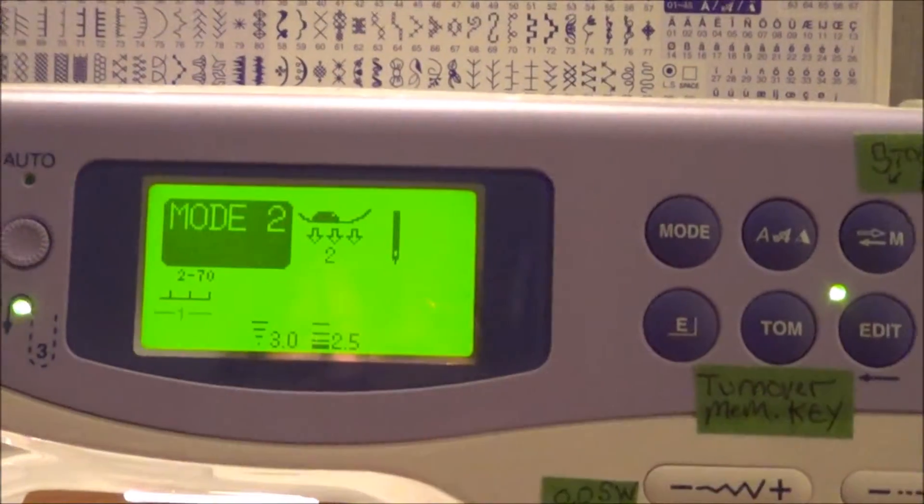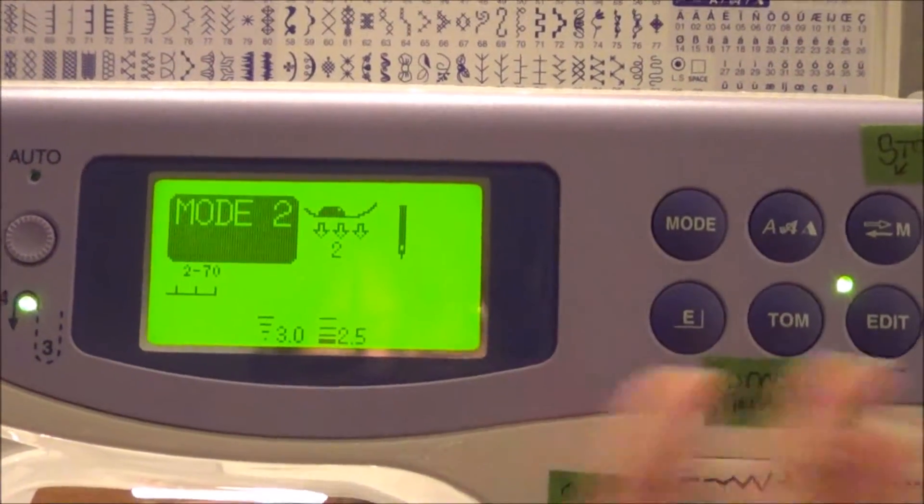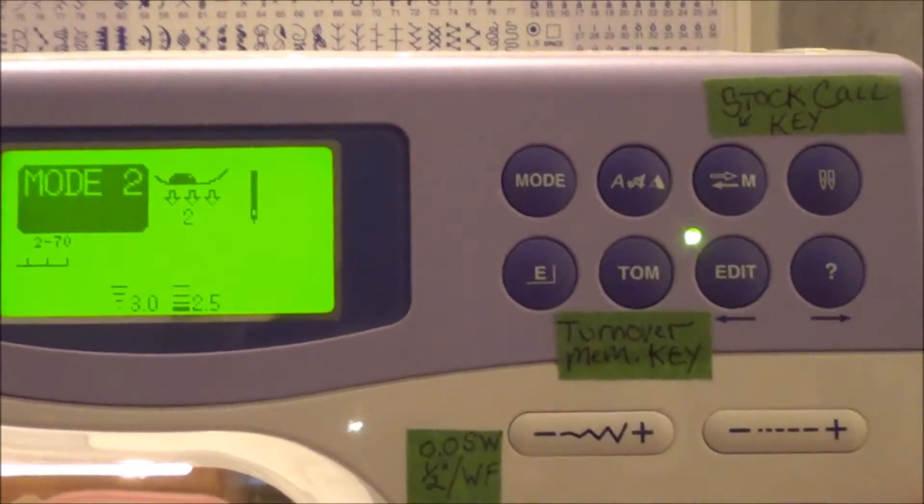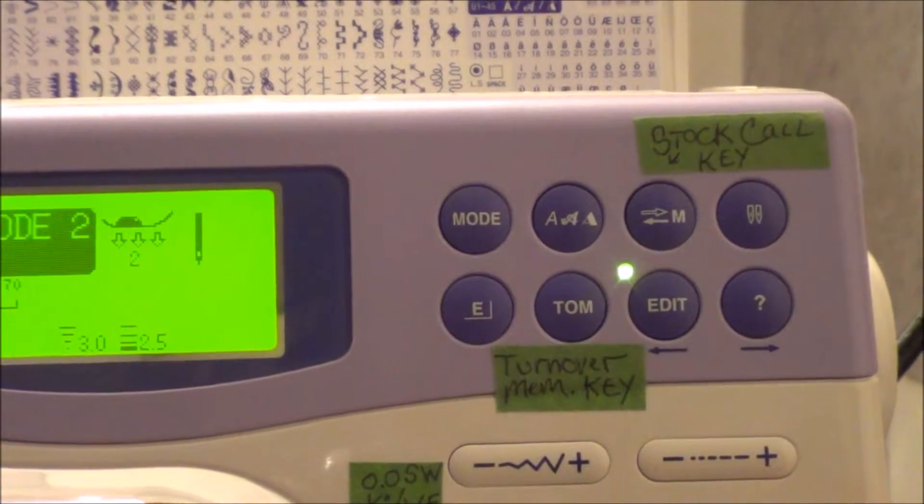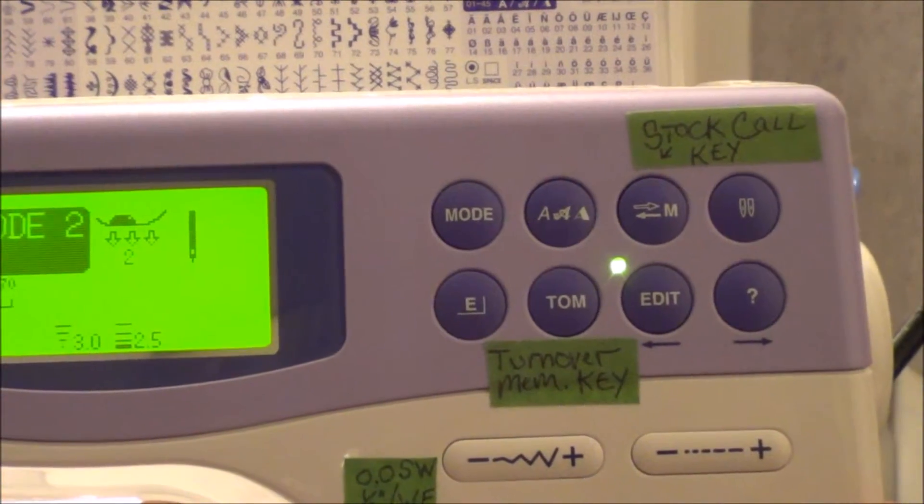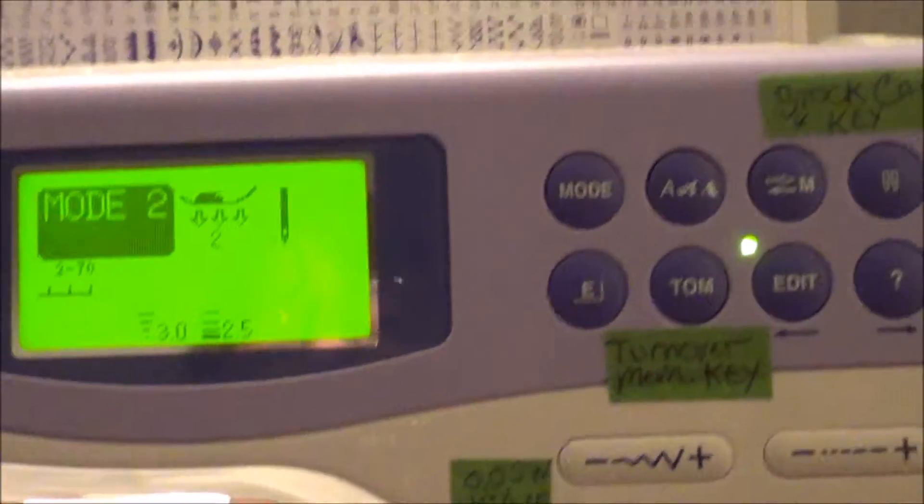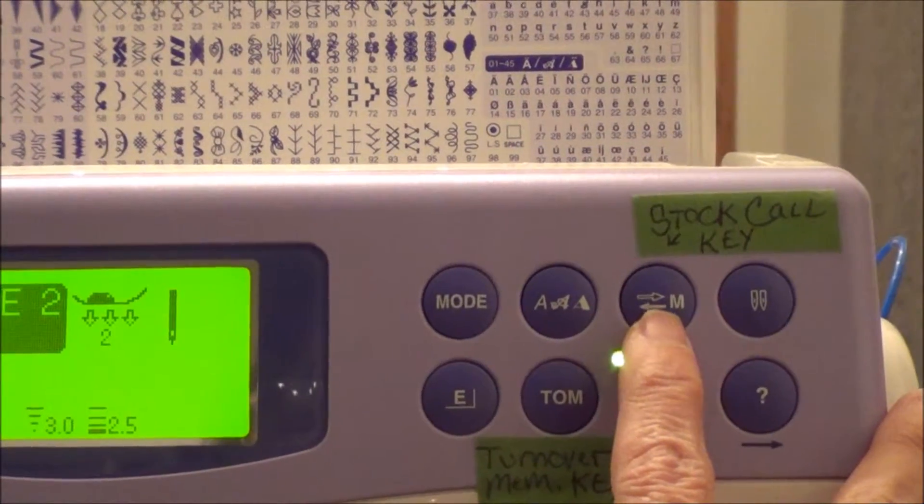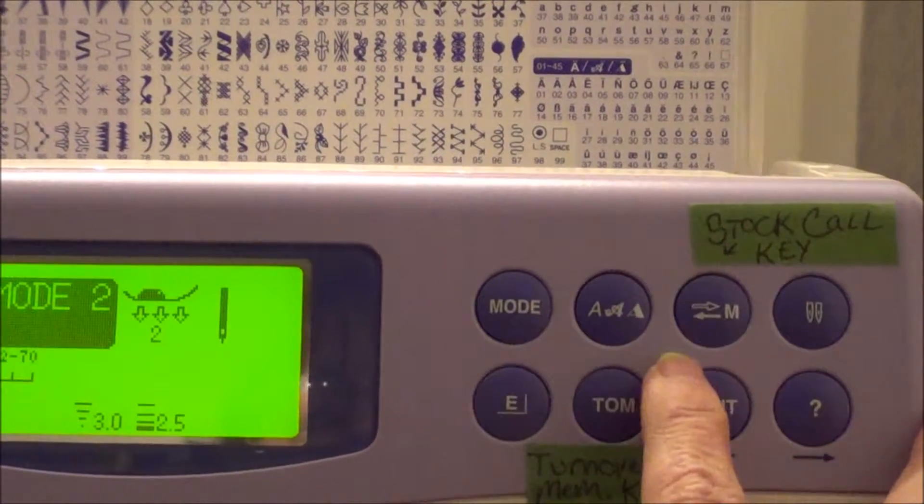And so at this point I can just start stitching and it'll work just fine. But if you wanted to save this so that you don't have to do it again, this is how you save it on my machine. So to save this setting, I press the stock call key. Now this M back and forth, they call it the stock call key.